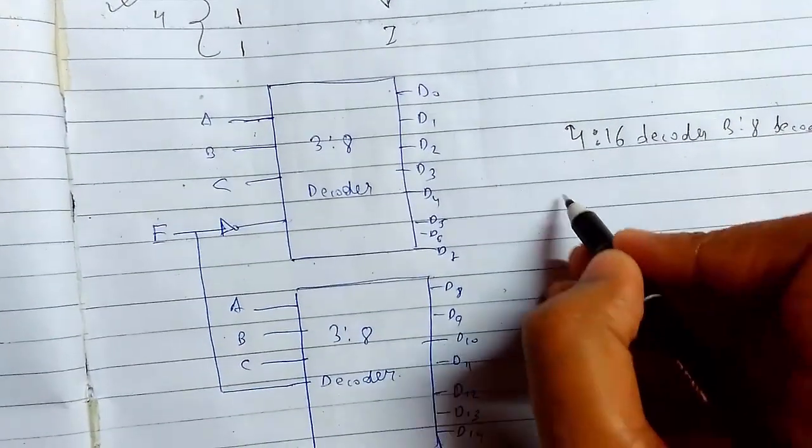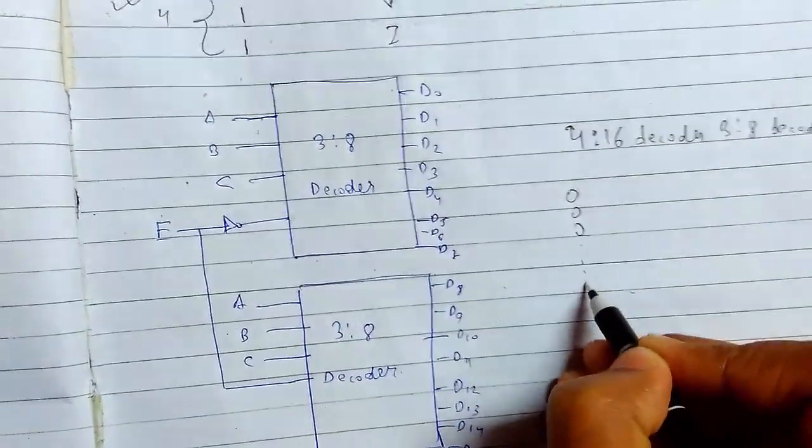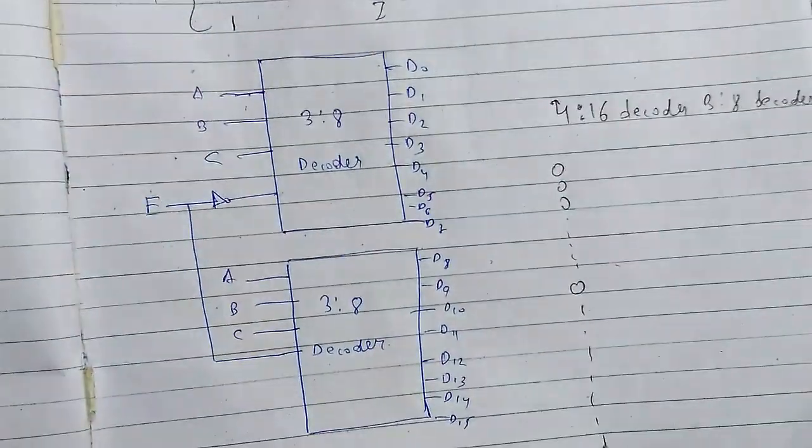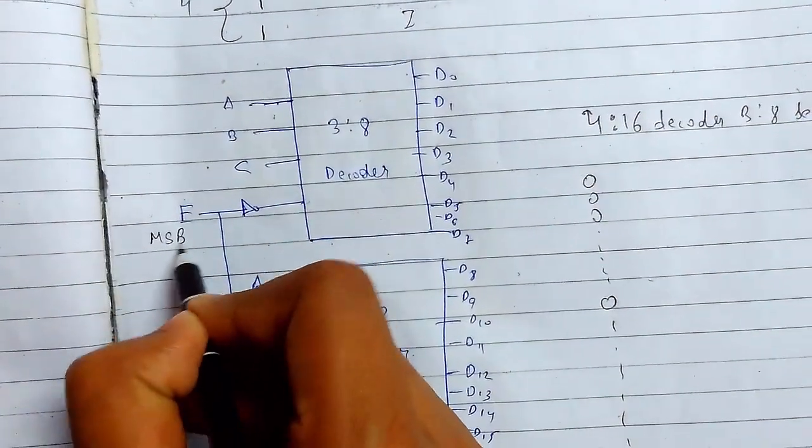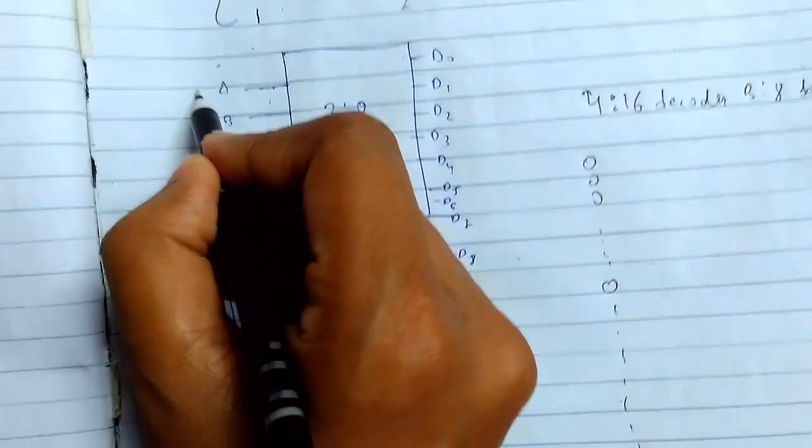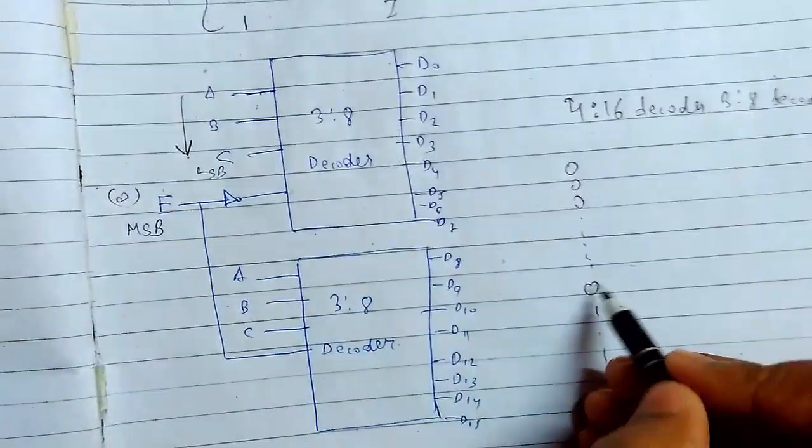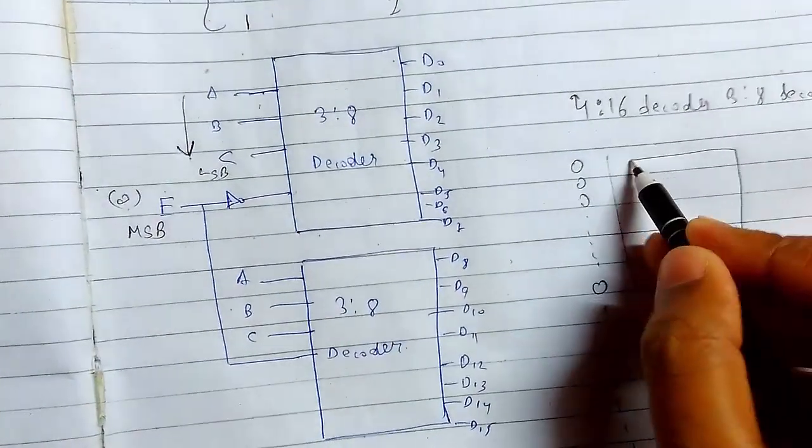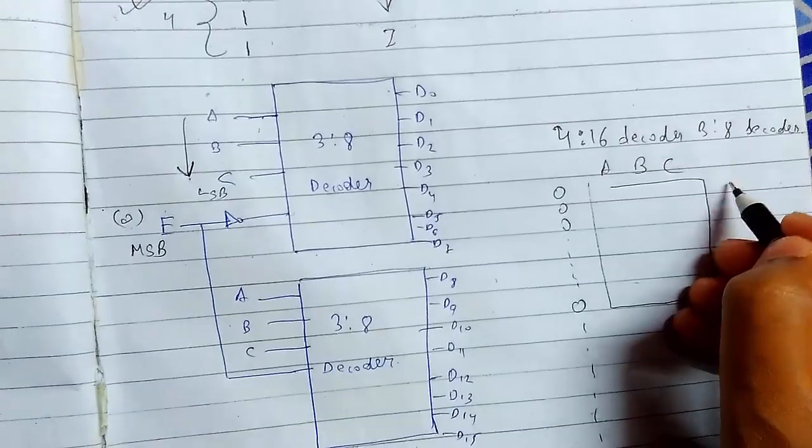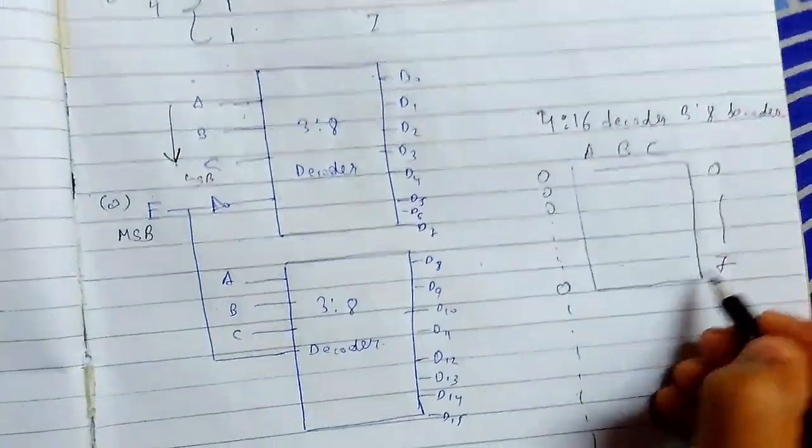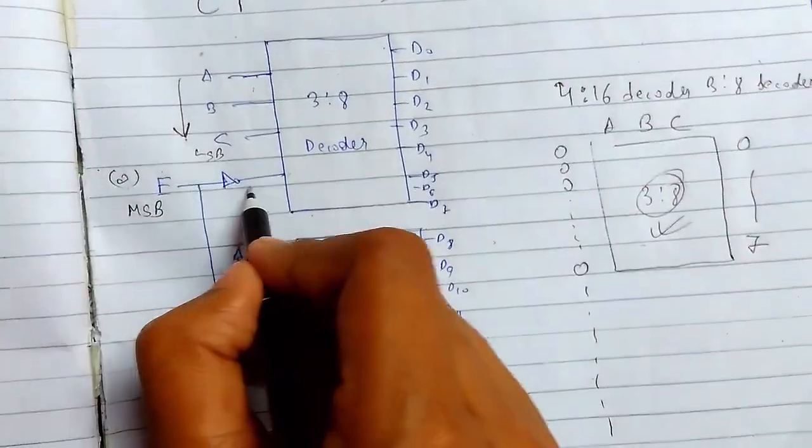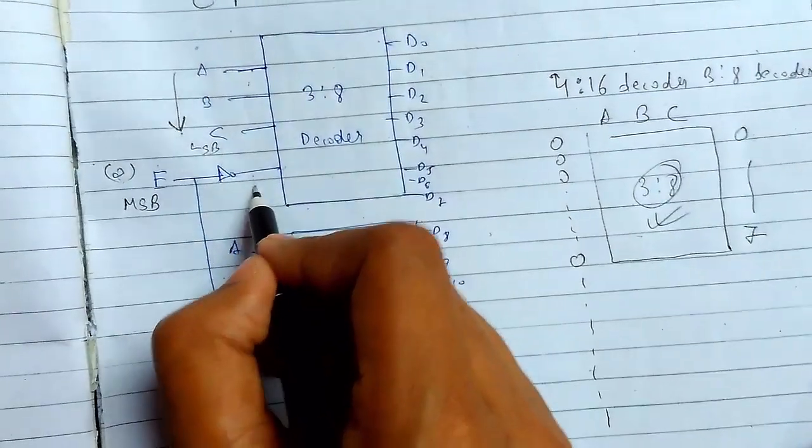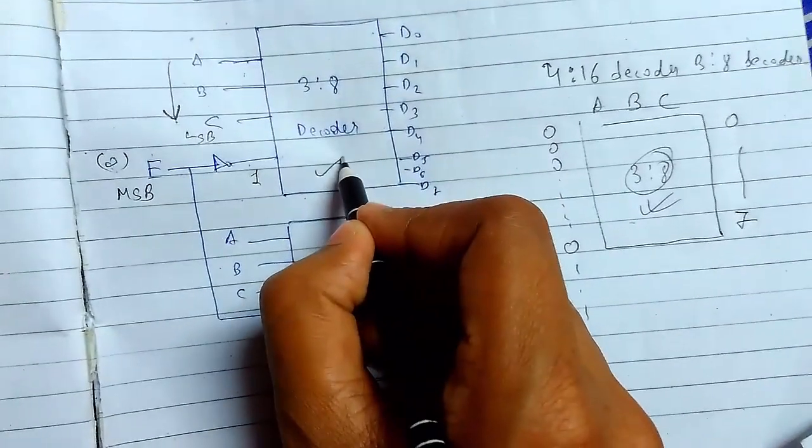When we observe the truth table, for the first 8 there are 0's and after that there are 8 ones. We can use that as MSB. This will be the MSB, this will be the LSB, order is decreasing. When E is set to 0, we can work for first 3 bits A, B, C and we will get output from 0 to 7. When we set this to 0, it will turn to 1 and this chip will get active, this will not. But when this is set to 1, this will go here and turn the decoder on. The complement of 1 is 0, so this will deactivate it.